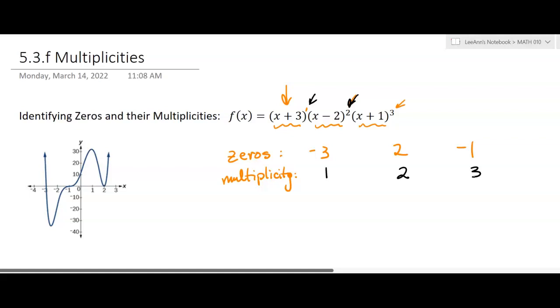The multiplicity affects the behavior on the graph at those zeros. So if you have a multiplicity of 1, the graph is just going to cross the x-axis. At negative 3, you're watching right here, it's crossing, the graph is coming down, and it's just crossing through that 0 at negative 3.